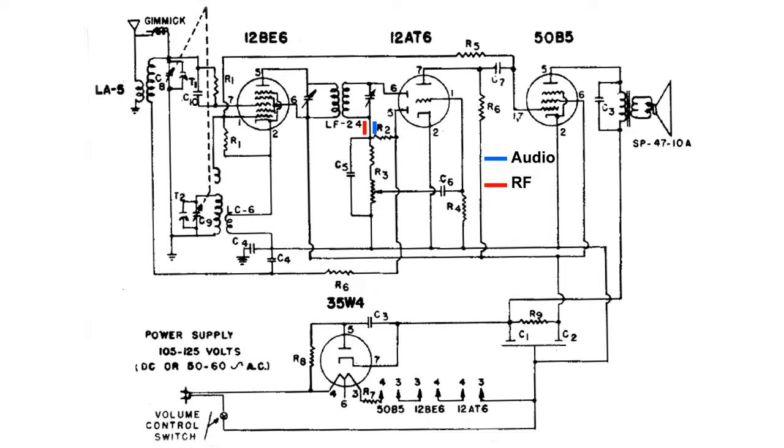Now what we want to do is steer the audio signal through the volume control and onto the grid of the 12AT6 for amplification. And that amplified signal goes through C7 over to the output tube of the 50B5.